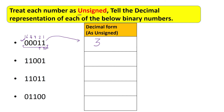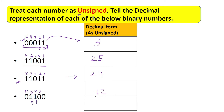Now treat the second number as unsigned. Using weights 1, 2, 4, 8, 16: it is 16 plus 8 = 24, plus 1 = 25. The third number is 16 plus 8 = 24, then plus 3 = 27. The fourth number is 8 plus 4 = 12. So treating all four numbers as unsigned, we get the decimal values: 3, 25, 27, and 12.